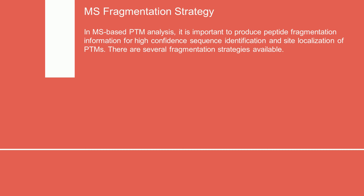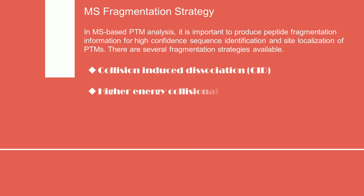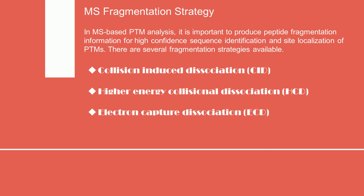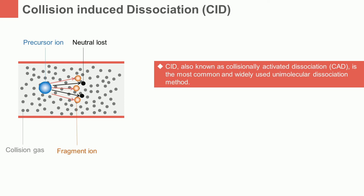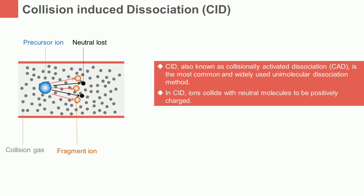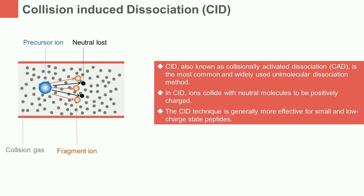In mass spectrometry-based post-translational modification analysis, it is important to produce peptide fragmentation information for high-confident sequence identification and site localization of post-translational modifications. There are several fragmentation strategies available, including collision-induced dissociation, higher-energy collisional dissociation, electron-capture dissociation, and electron-transfer dissociation. Collision-induced dissociation, also known as collisionally activated dissociation, is the most common and widely used unimolecular dissociation method, in which ions collide with neutral molecules to be positively charged. The collision-induced dissociation technique is generally more effective for small and low-charge state peptides.